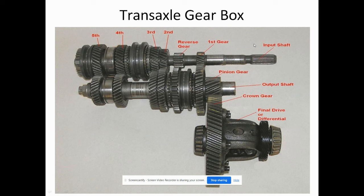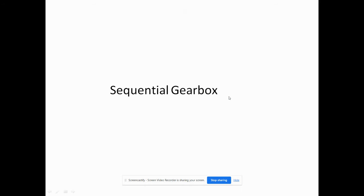This is the real image of the transaxle gearbox. We can see the fifth gear, fourth gear, third gear, second gear, reverse gear, and first gear — all meshing with each other. One thing to observe clearly is that we are using helical gears here. Every gear is a helical gear. This is the output shaft and this is the input shaft for the transaxle gearbox.